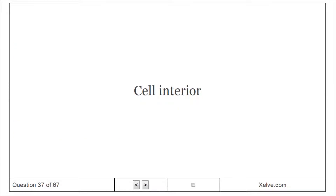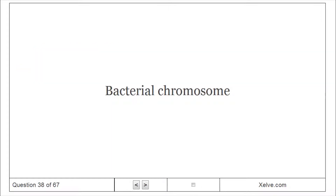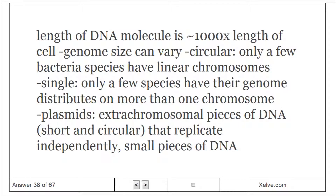Cell interior: bacteria have no true nucleus; DNA is packaged in a structure known as the nucleoid. The length of the DNA molecule is approximately 1000× the length of the cell. Genome size can vary; chromosomes are circular — only a few bacterial species have linear chromosomes. Most have a single chromosome; only a few have their genome distributed on more than one. Plasmids are extrachromosomal pieces of short, circular DNA that replicate independently.